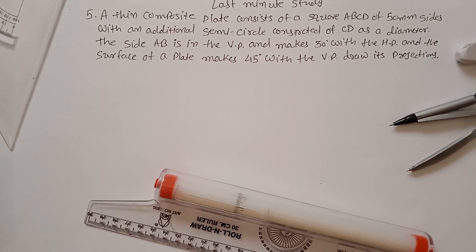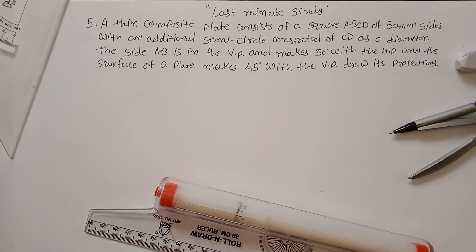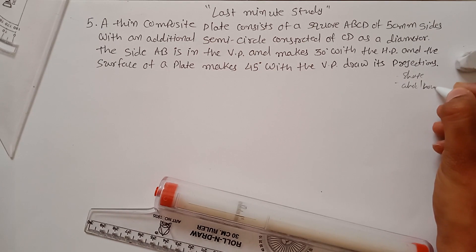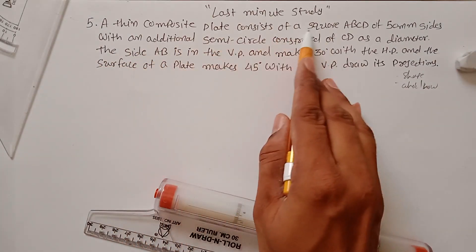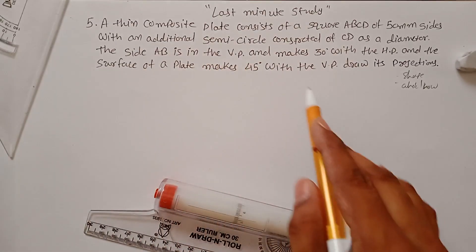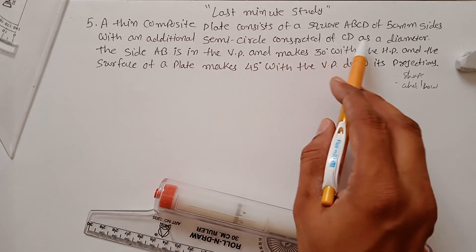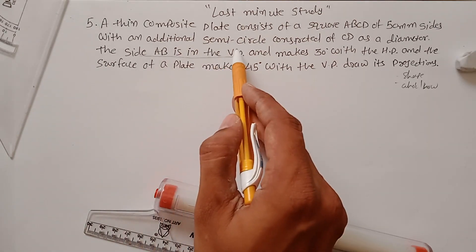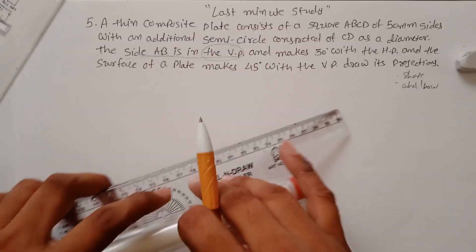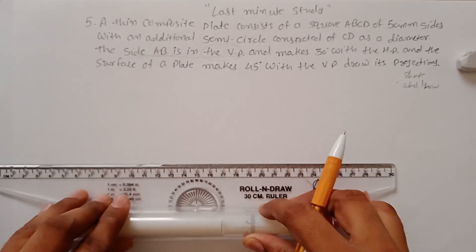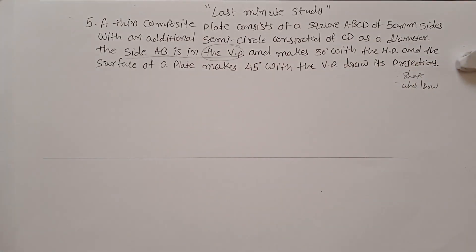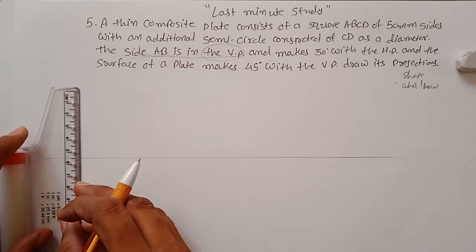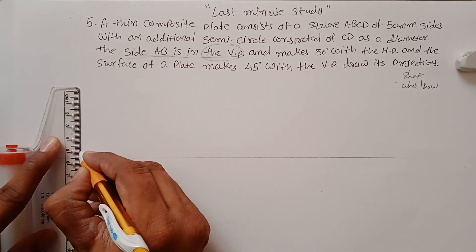Problem number five from engineering planes - sheet projection of plane sheet. The shape is a thin composite plate consisting of a square with an additional semicircle. The side AB is in the VP, so it is resting on the VP with its side AB. Since it is resting on VP, the front view gives the true shape. First, construct a square of 50mm side.